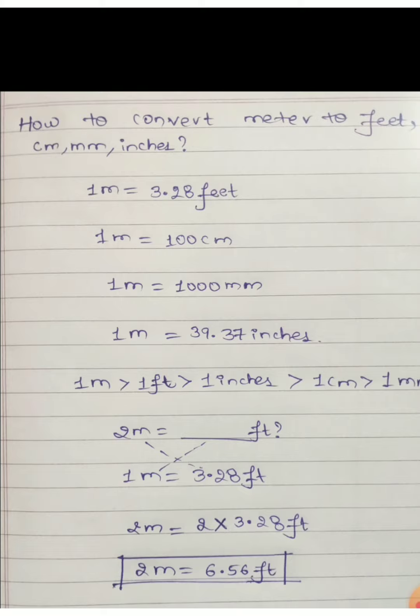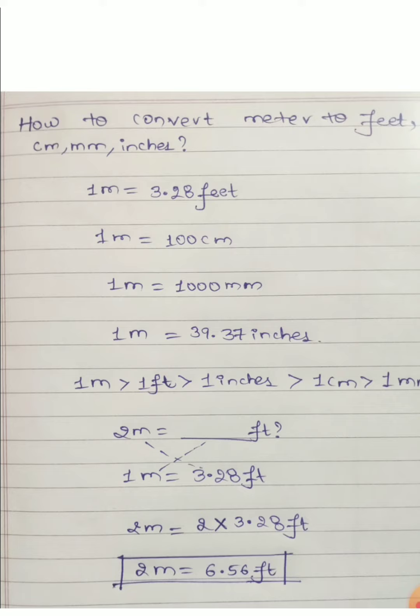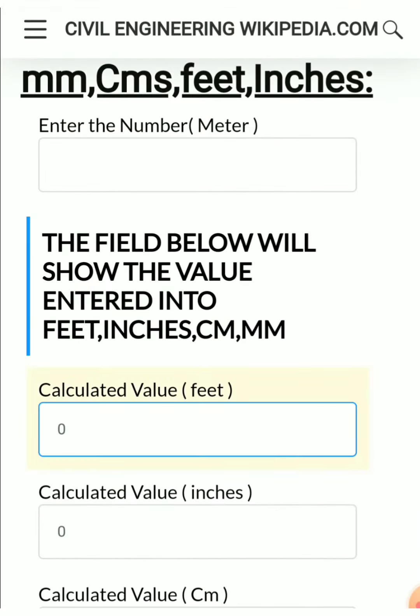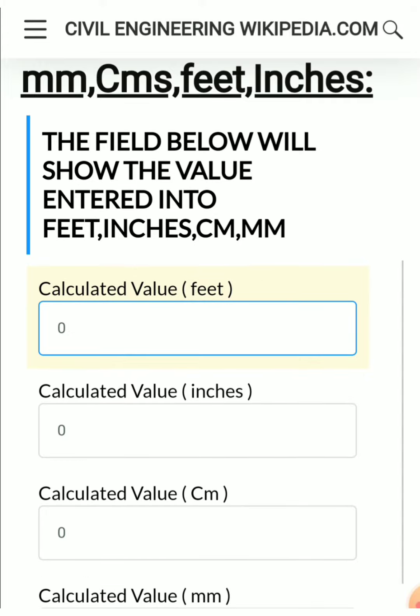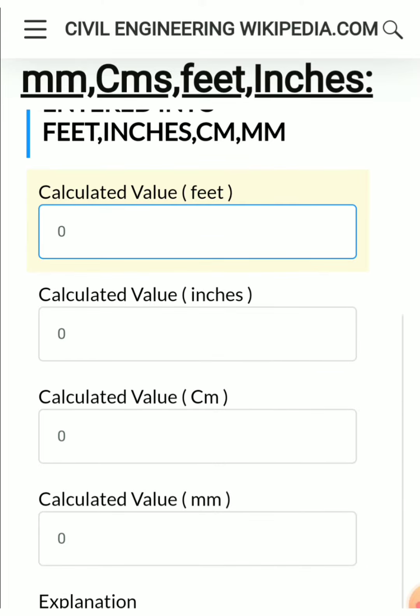If you have a larger number, for example 64 meters equals how many feet, I will give you one link that will give you direct answers. That is civilengineeringwikipedia.com. Just type your value here, I will show